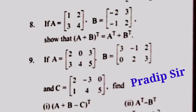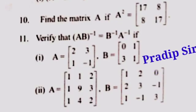Question eight: show that the transpose of a sum is equal to the sum of the transposes. The next question gives A, B, C and you have to simplify the algebra — that means (A+B−C) transpose equals A transpose minus B transpose. It's one of the easiest questions in the determinant and matrix topic. Then question 10 gives A² and you have to find A — also previously discussed. And next is to verify that the inverse of (A×B) equals B inverse times A inverse.